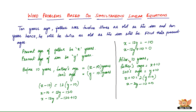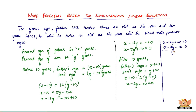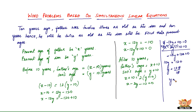Now let us solve these two equations. We've got X minus 12Y plus 110 equals 0, and X minus 2Y minus 10 equals 0. Let us subtract these — we lose X, which is good. We're left with only one variable. So 12Y minus 2Y gives minus 10Y, and 110 plus 10 gives plus 120, equal to 0. So 10Y equals 120, or Y equals 12. The present age of the son is 12 years.